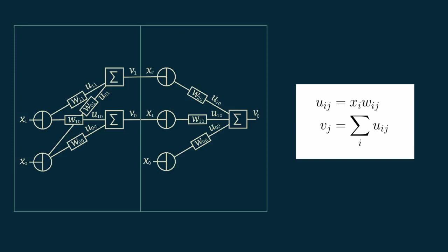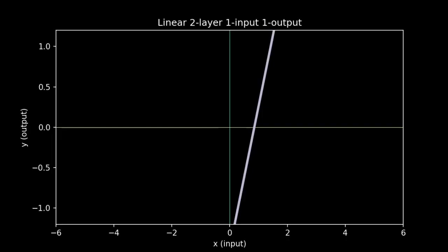We can take this two-layer linear network, create a hundred hidden nodes, set all of the weights randomly, and see what model it produces. Even after adding all of this structure, the resulting models are still straight lines. In fact, it doesn't matter how many layers you have or how many hidden nodes each layer has. Any combination of these linear elements with weights and sums will always produce a straight line result.